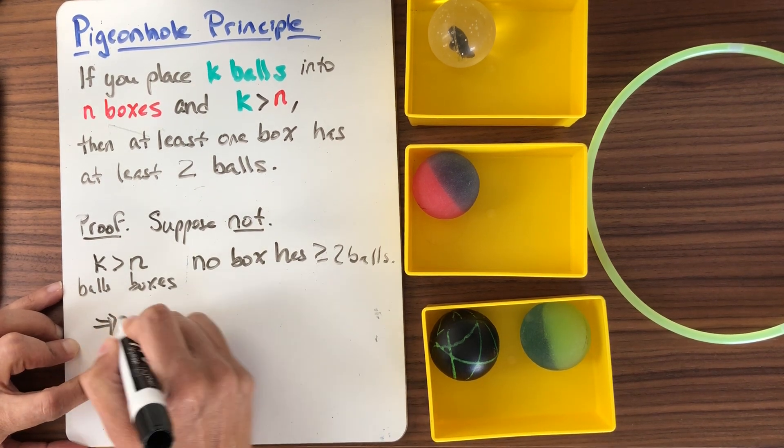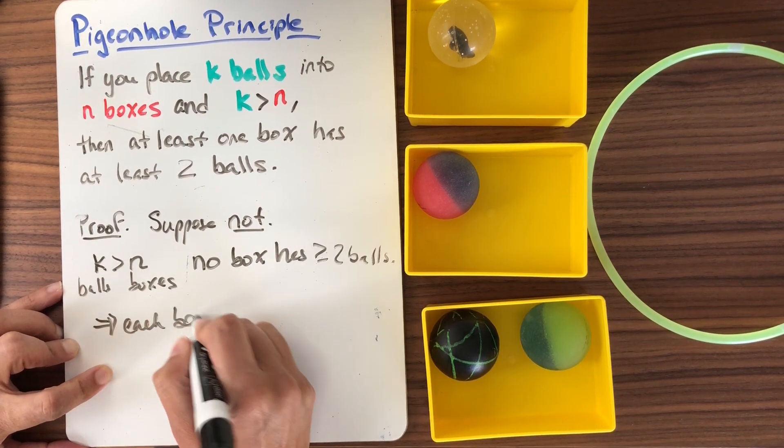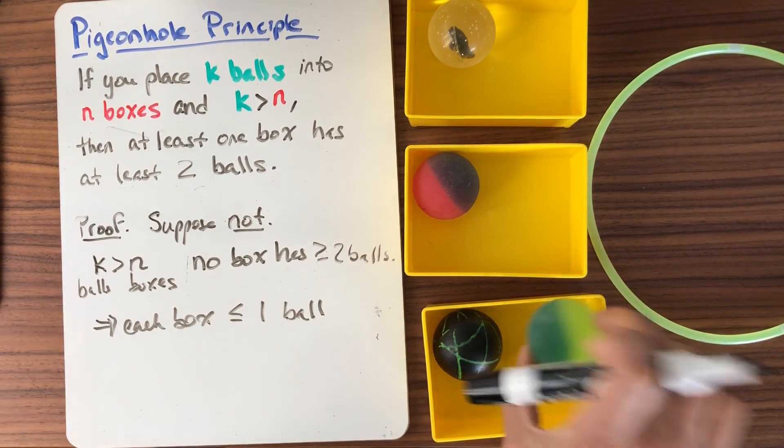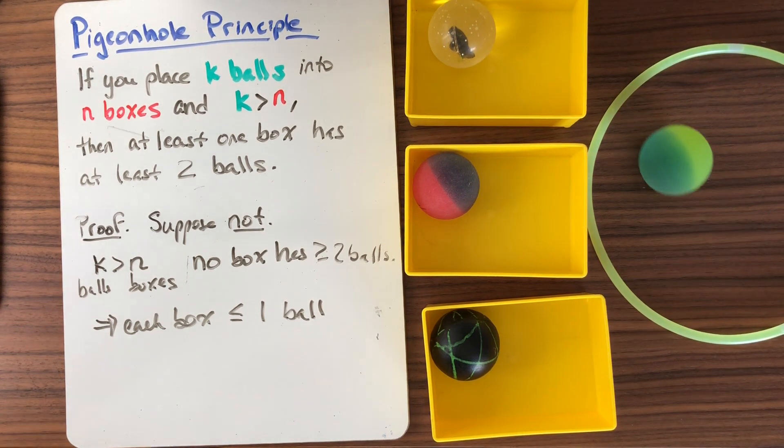Well, what does that mean? Well, that tells me that each box has less than or equal to one ball, right? So that would be a situation like this.